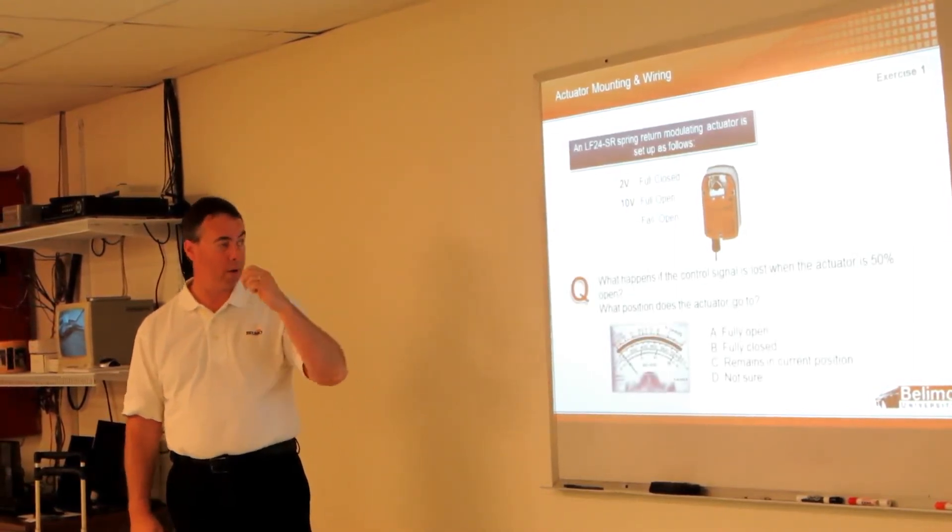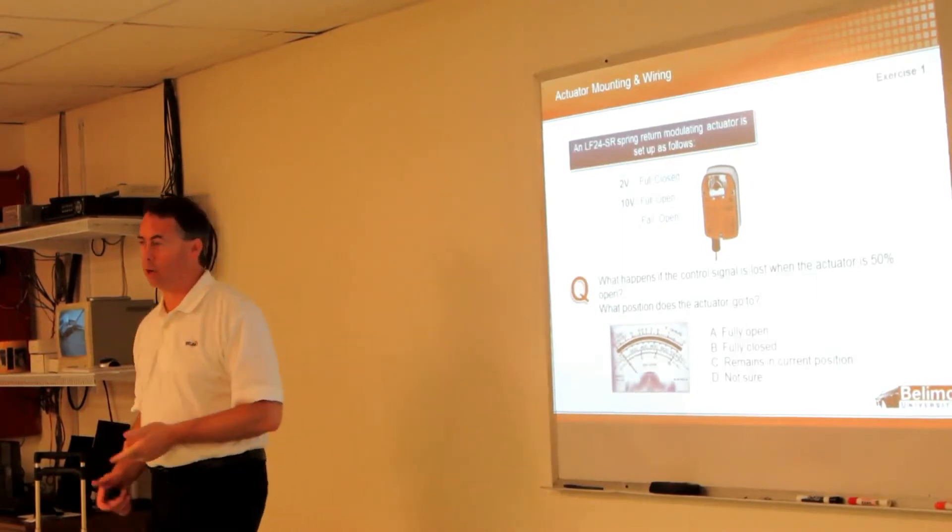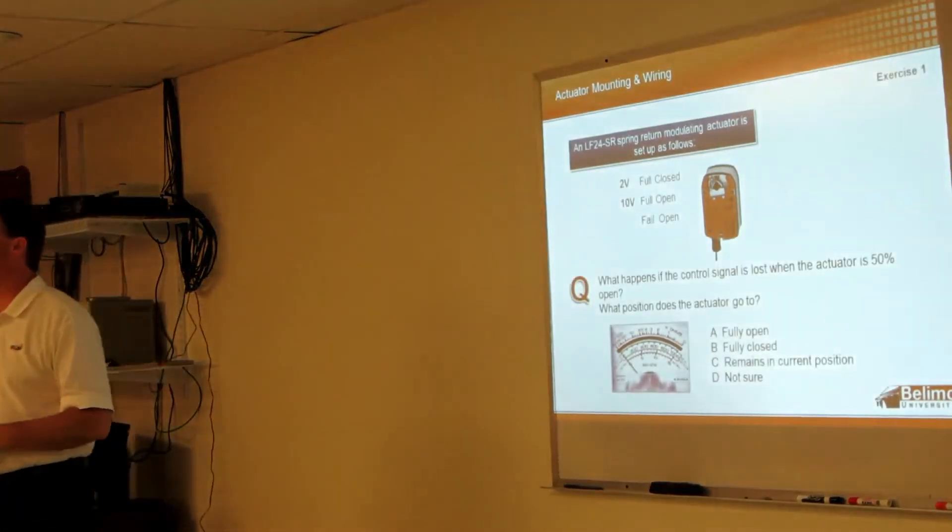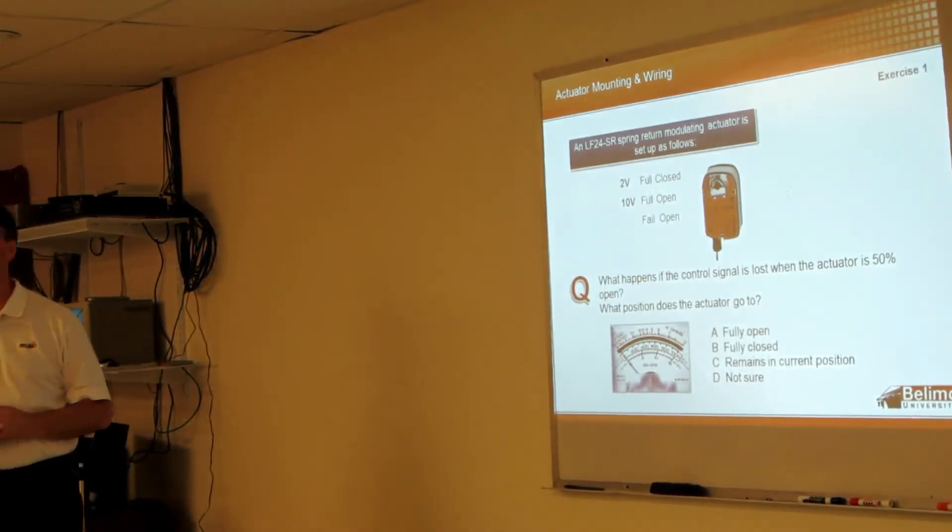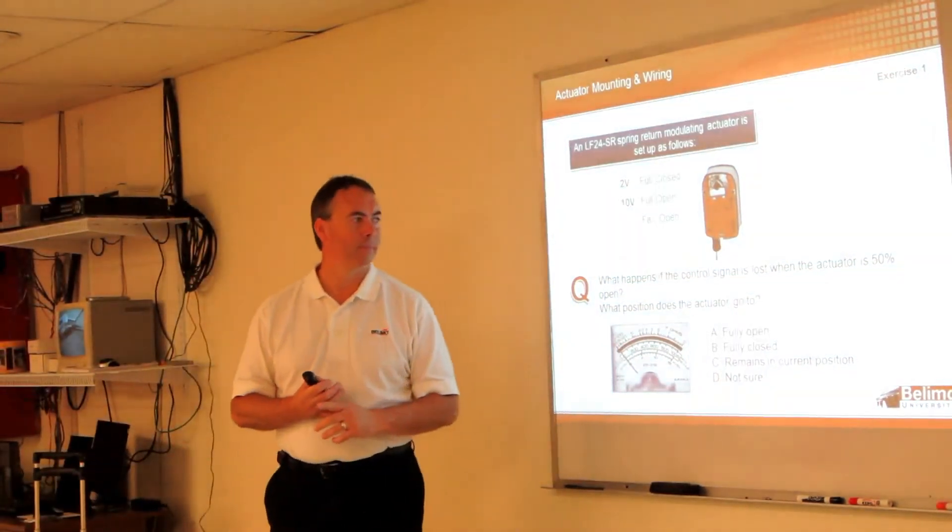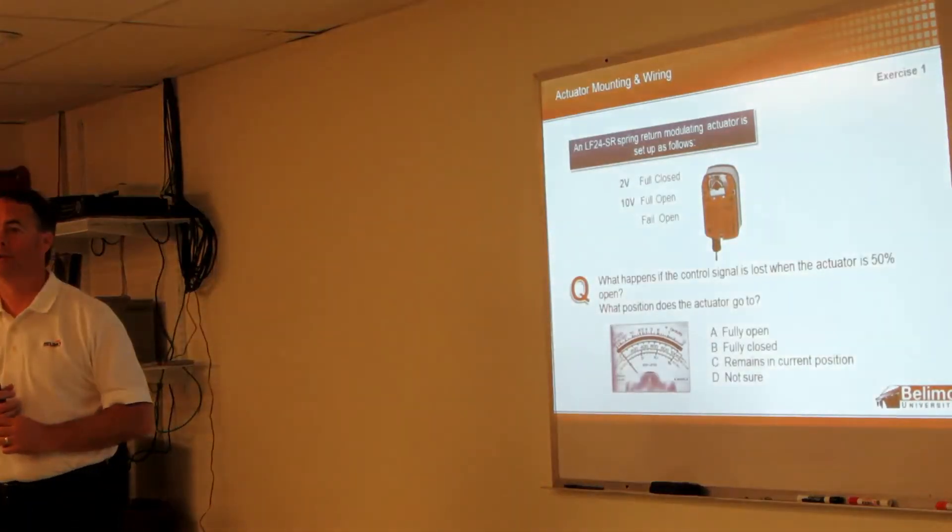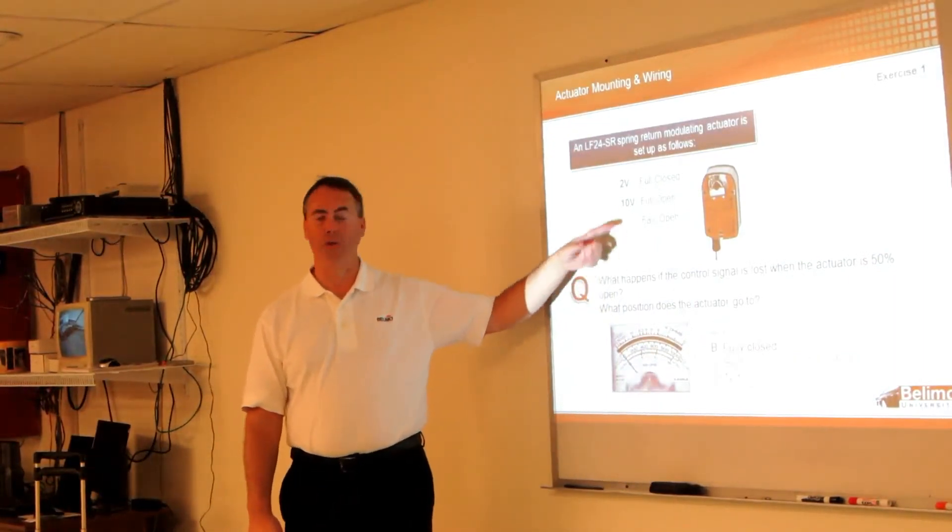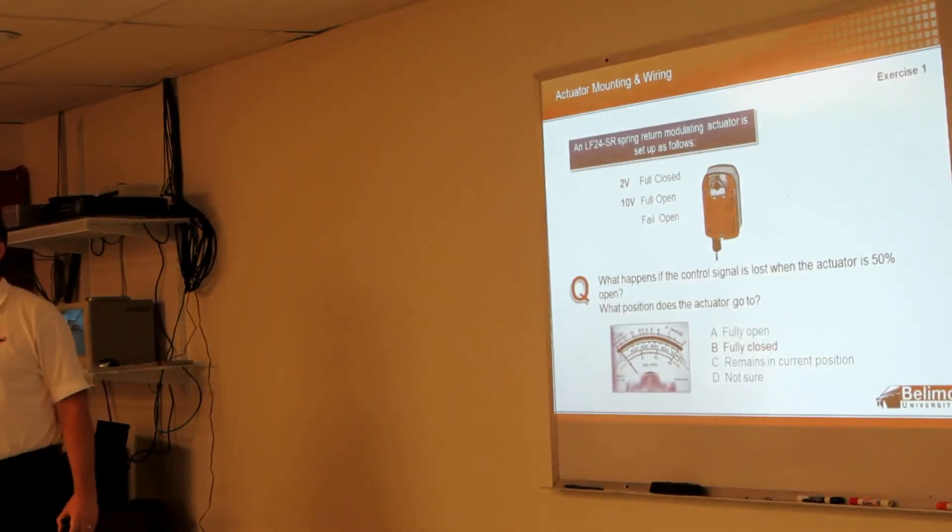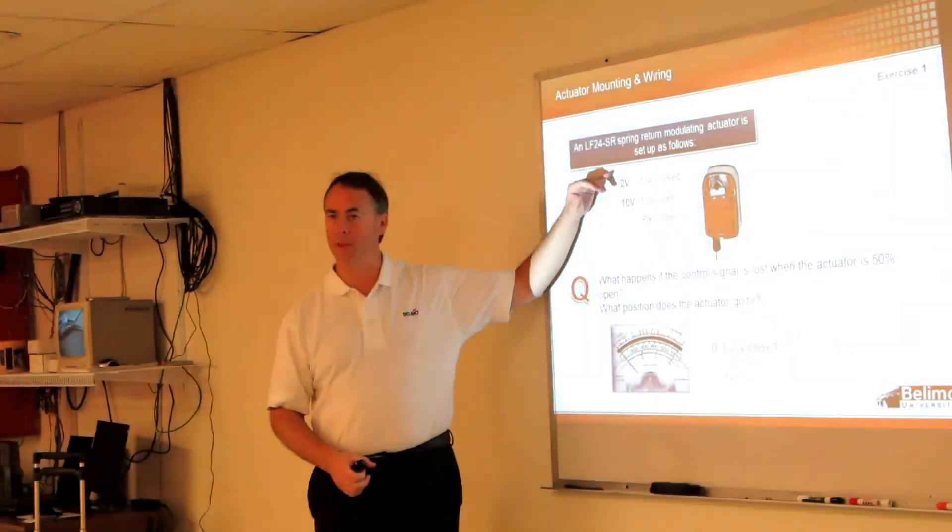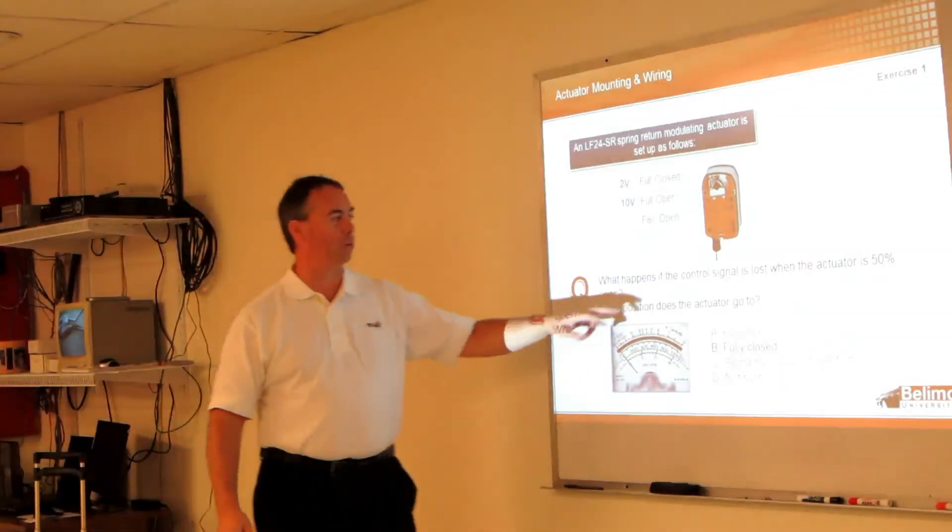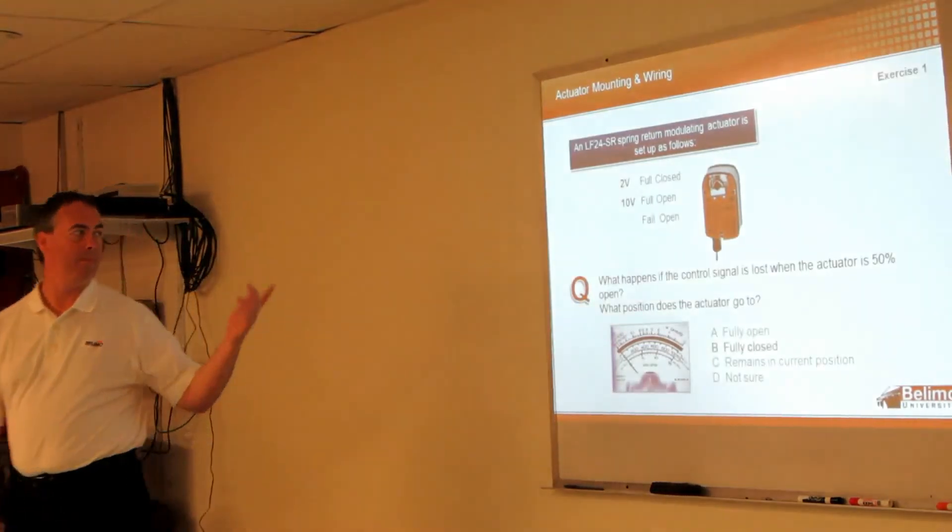So with this scenario, what is going to happen if we lose the control signal when it's at 50%? So 50% would be, we're at 6 volts. What's going to happen with the actuator? What position is it going to go? It's going to go closed. And I'll tell you why, because it's losing the control signal, so it's seeing 0 volts. So it's thinking that you've gone to the closed position, that you can give it a 0 or 2 volt signal. So it's going to close because we've lost the control signal. We didn't lose power. It still has power. So that's why it's going to go closed.